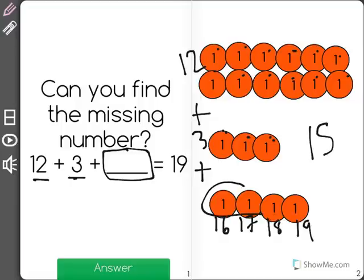As you can see, I had to count 4 more to get to 19. The missing number is 4.